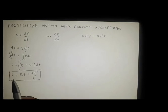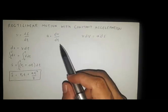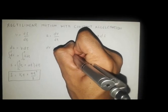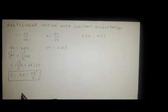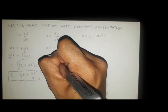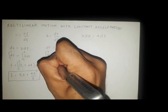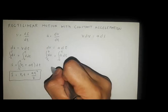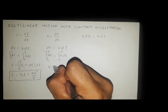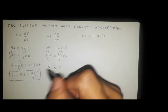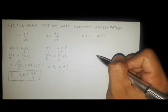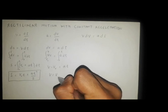This is the equation of position as a function of time. Now we have a equals dv/dt. If we rewrite this, we have dv equals a dt. By integration, we have the integral of dv with limits v₀ to v equals the integral of a dt with limits 0 to t. So we have v minus v₀ equals at.